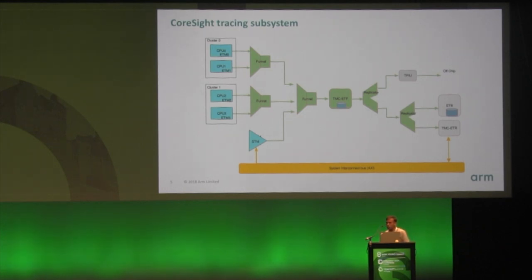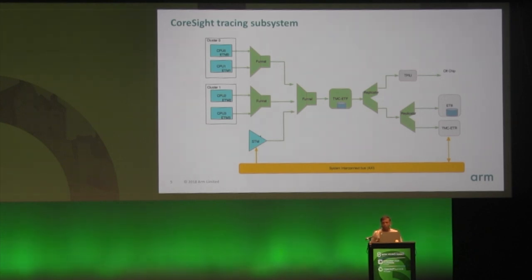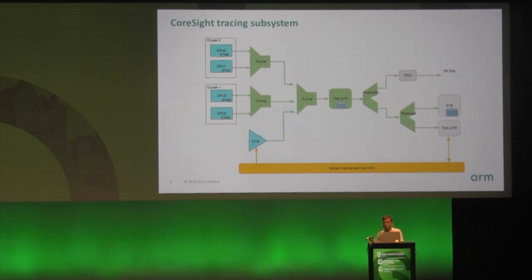This is how a typical CoreSight tracing subsystem looks like. There are three different classes of components. The first are the source components which generate the trace data. In the picture there are four CPUs, and each CPU has an entity called ETM — the Embedded Trace Macrocell — which closely monitors the CPU's execution and generates trace data. There is also the System Trace Macrocell, STM, which can be used by an application to generate application trace into the trace bus infrastructure.